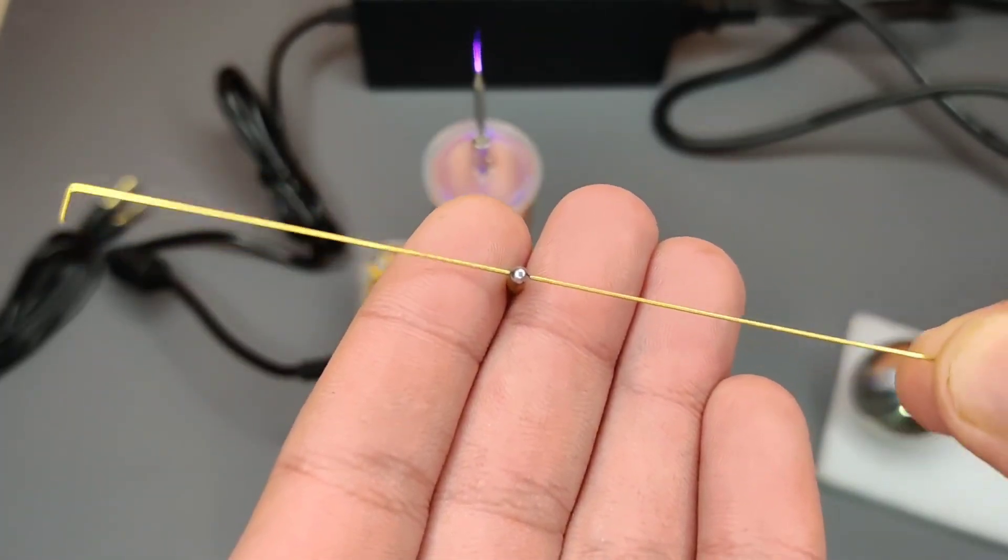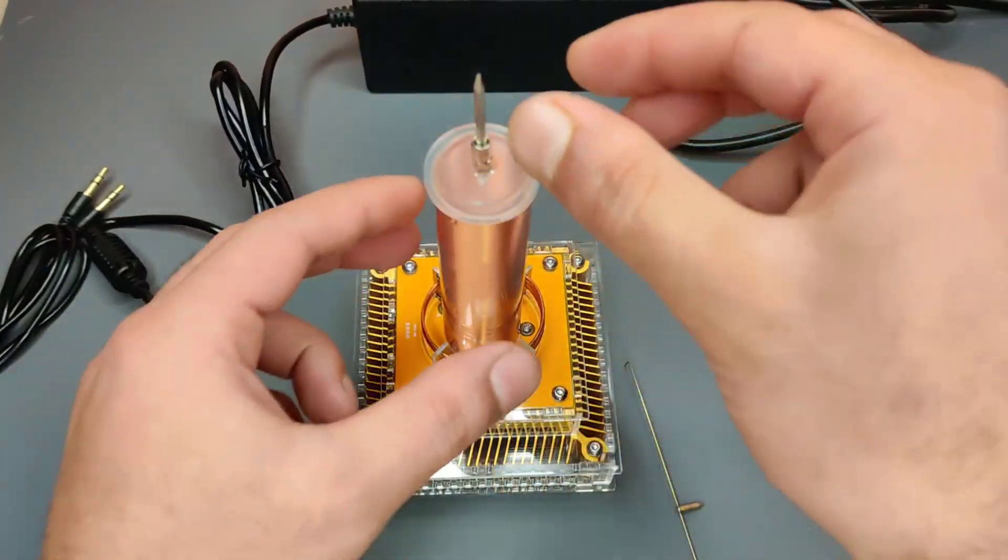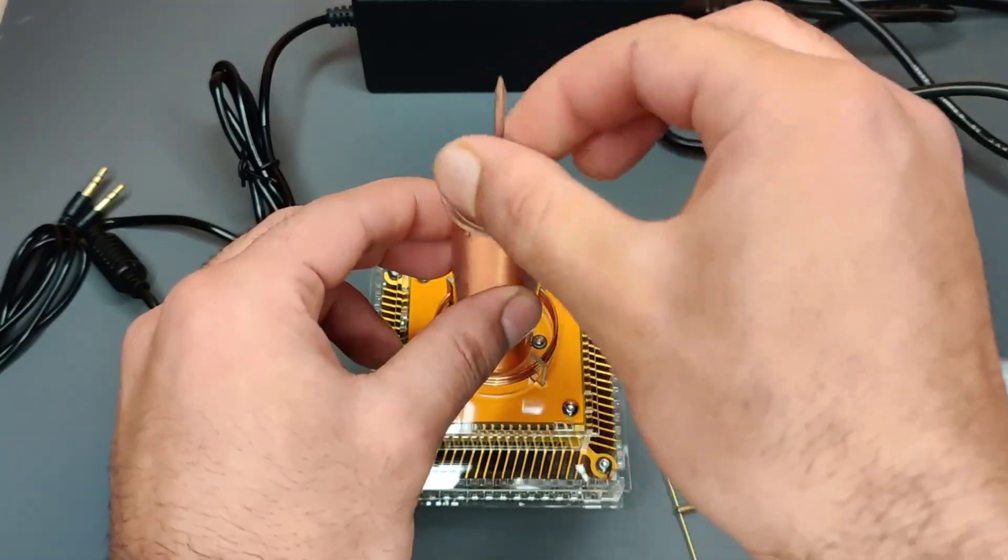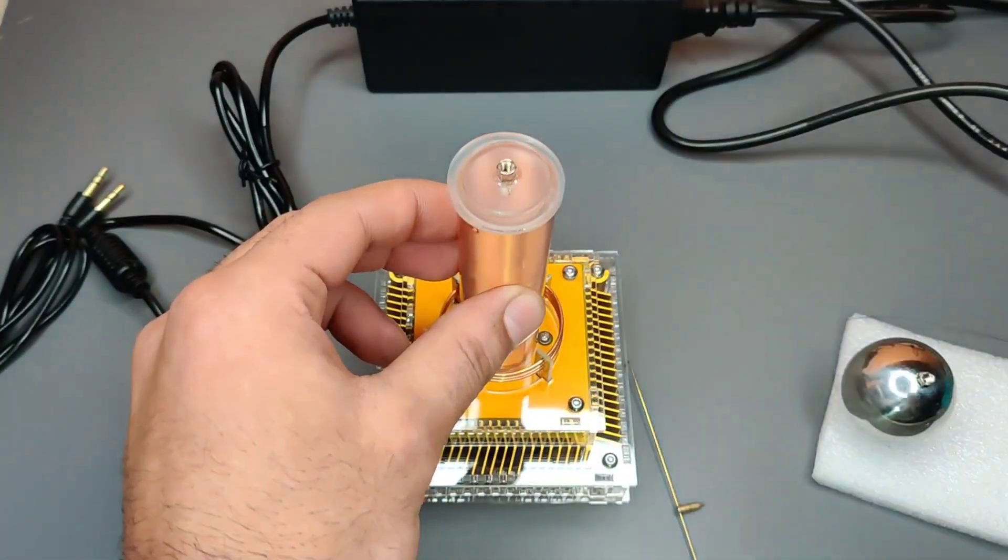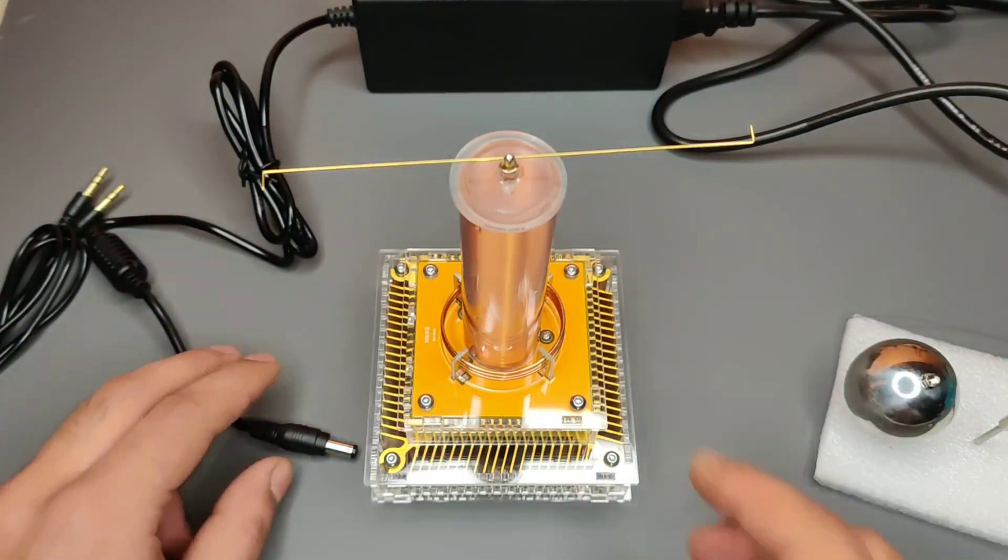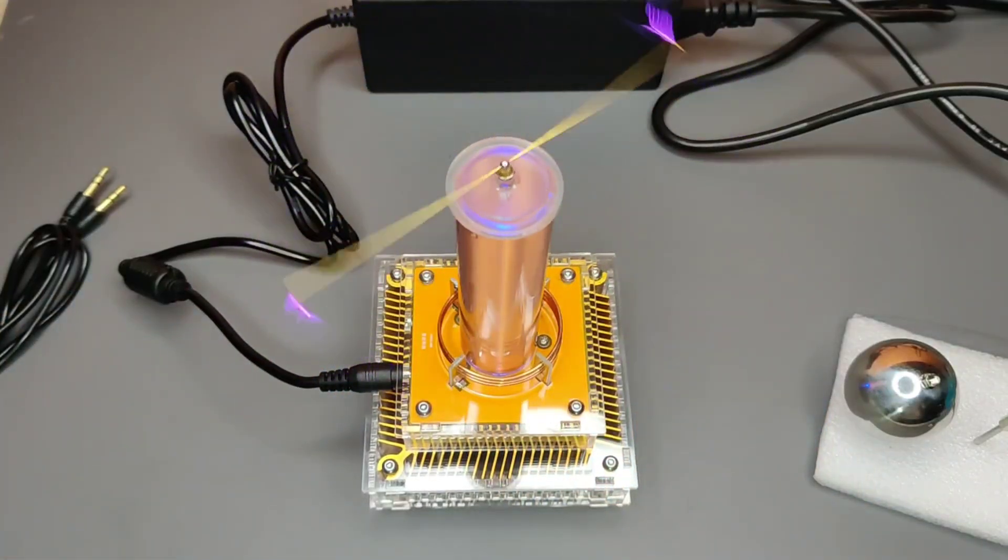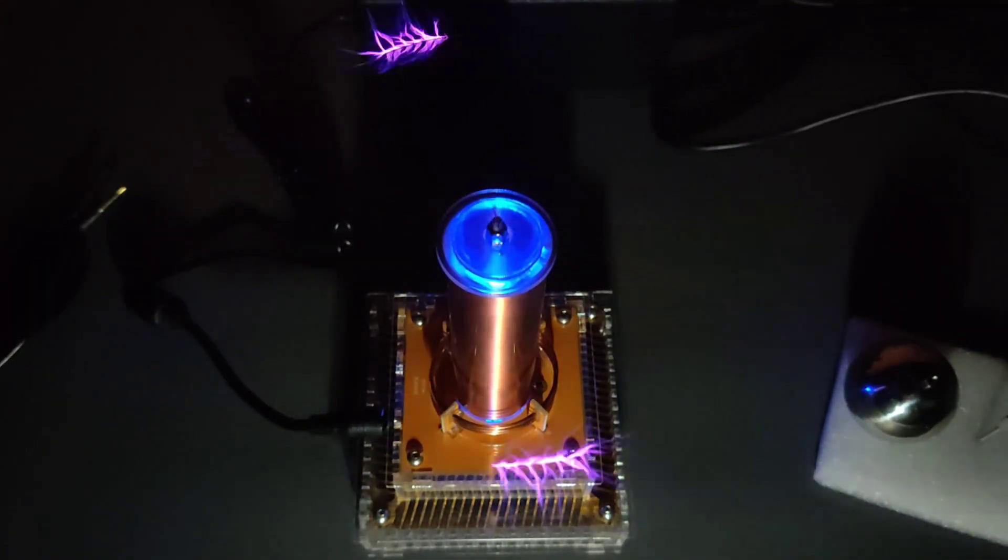Now before we try this music arc dispenser, we should disconnect the DC input. This will avoid you getting any burn if strong arc reacted to your fingers. Okay, now let's plug back DC input. It is awesome, you can see it rotating while dispensing the arcs from the ends and also acts as speaker so you can now play music through Bluetooth.